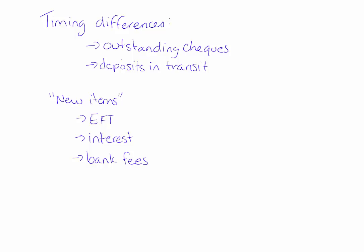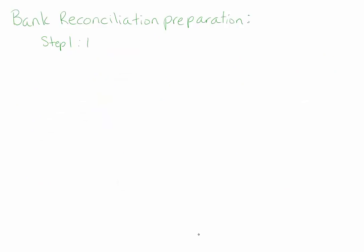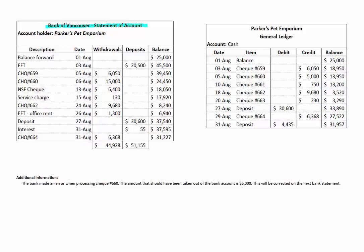So let's go through an example of a bank reconciliation, and this will make a little bit more sense. In an accounting class, when you're asked to make a bank reconciliation, you're generally given two things plus some additional information: a bank statement and your general ledger or a T-account of your cash transactions. Step one is to identify your bank statement and your books. A very common mistake on exams is that students mix up the bank statement and the company's books. On the bank statement, deposits mean money is coming in, and withdrawals mean money is going out. On the books, a debit to cash means we're adding cash because cash is an asset, and a credit means we're reducing our cash.